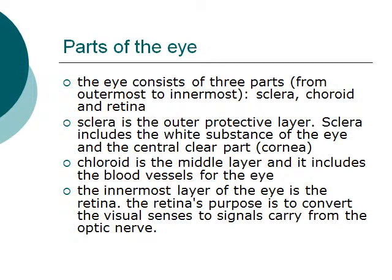Choroid is the middle layer and includes the blood vessels for the eye. The innermost layer of the eye is the retina. The retina's purpose is to carry visual information as signals through the optic nerve.